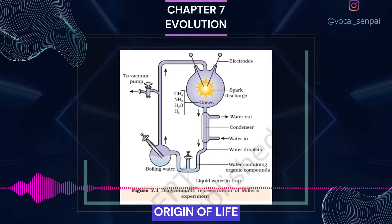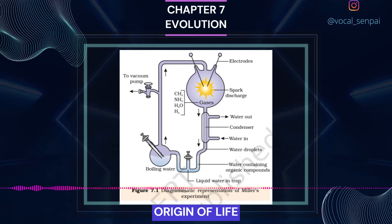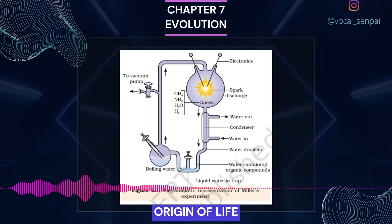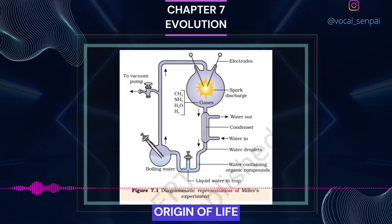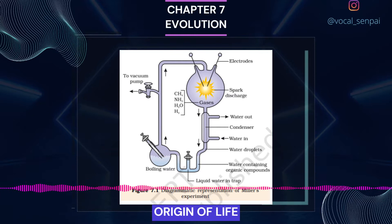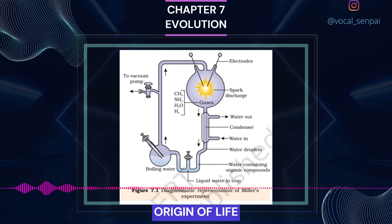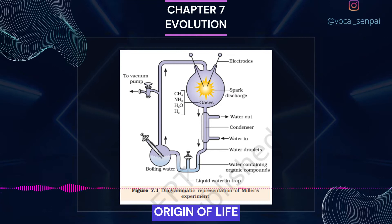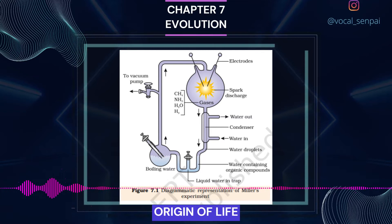In 1953, S.L. Miller, an American scientist, created similar conditions in a laboratory scale. He created electric discharge in a closed flask containing CH4, H2, NH3 and water vapor at 800°C. He observed formation of amino acids. In similar experiments, others observed formation of sugars, nitrogen bases, pigment and fats. Analysis of meteorite content also revealed similar compounds, indicating that similar processes are occurring elsewhere in space. With this limited evidence, chemical evolution was more or less accepted.